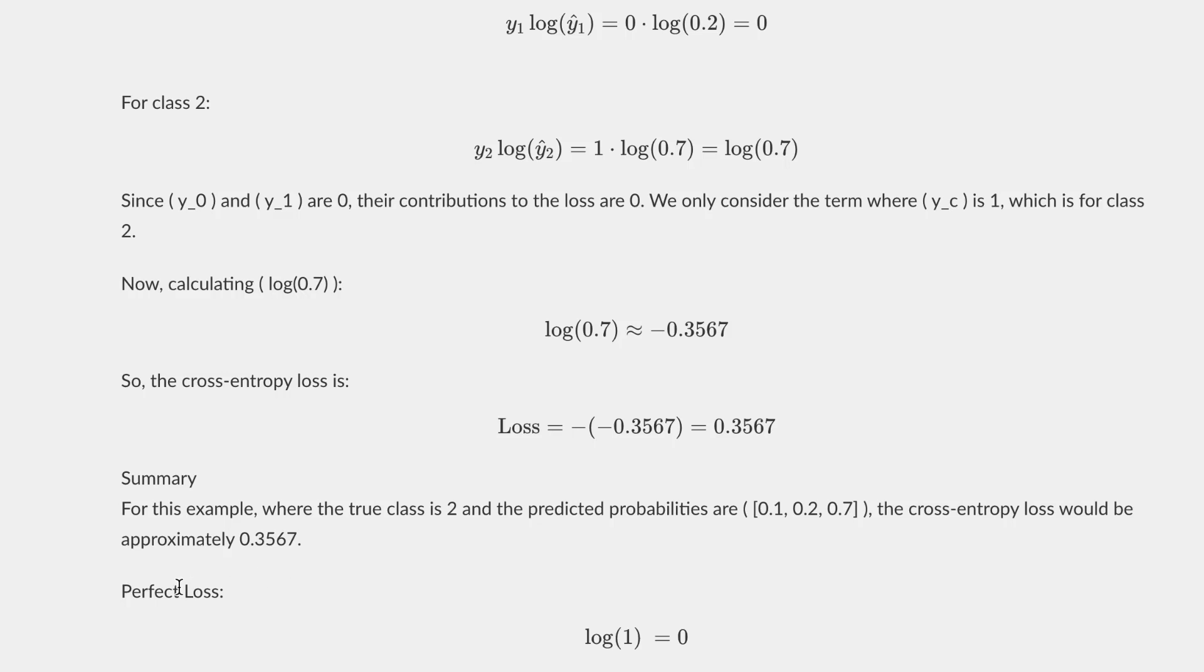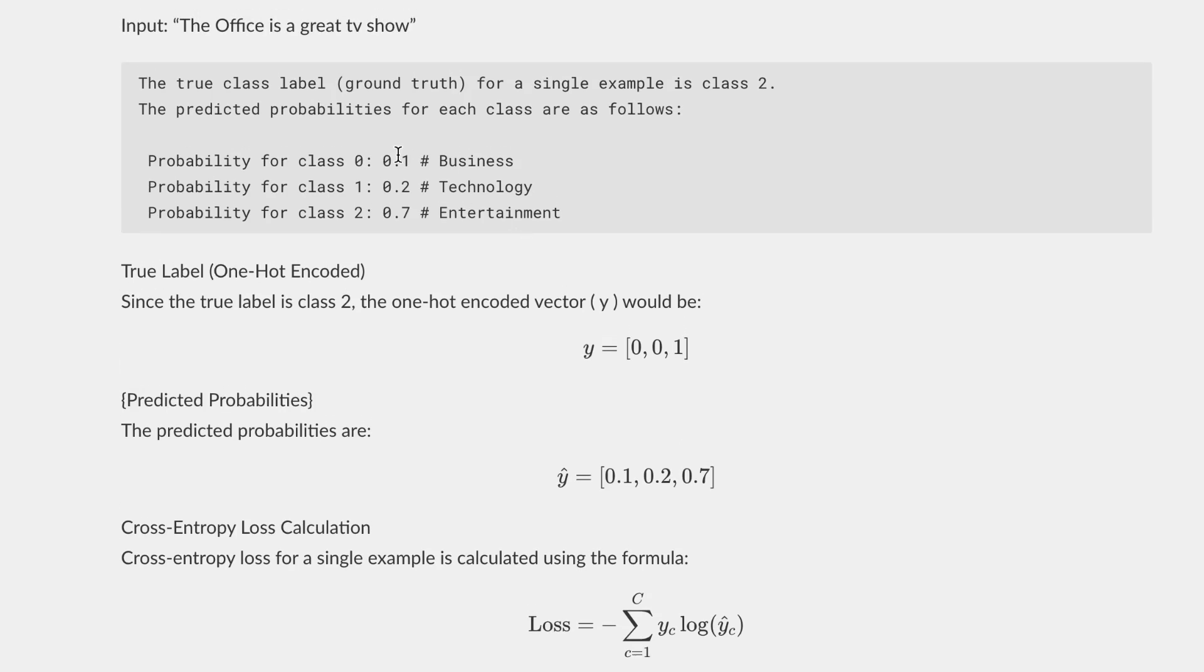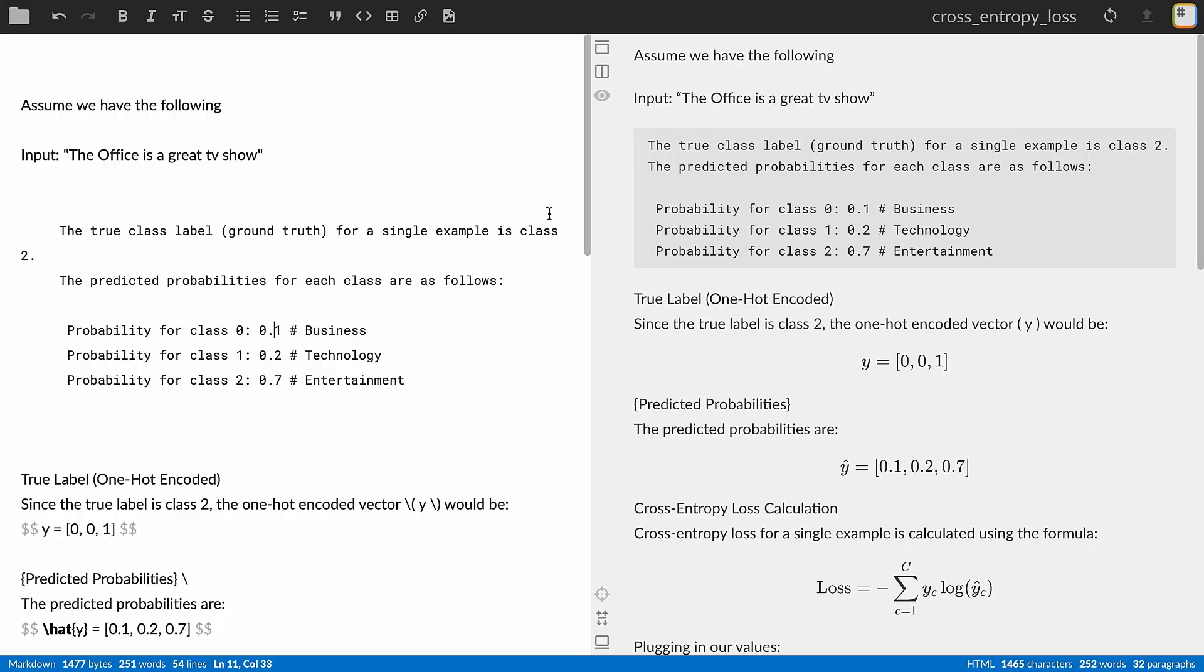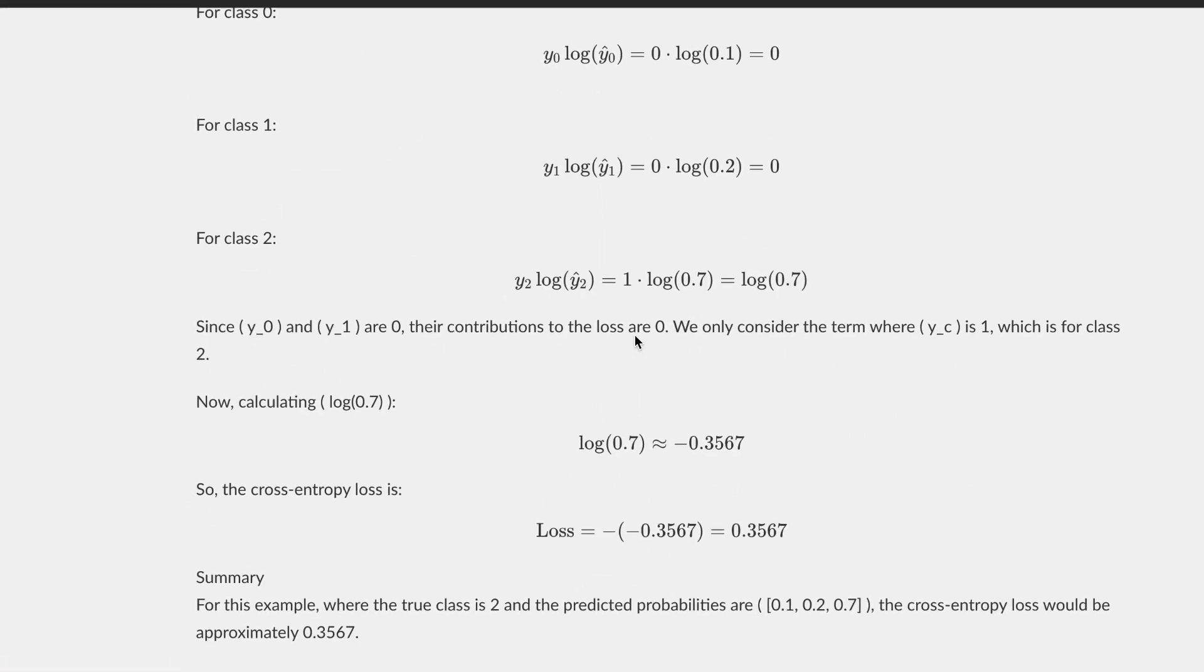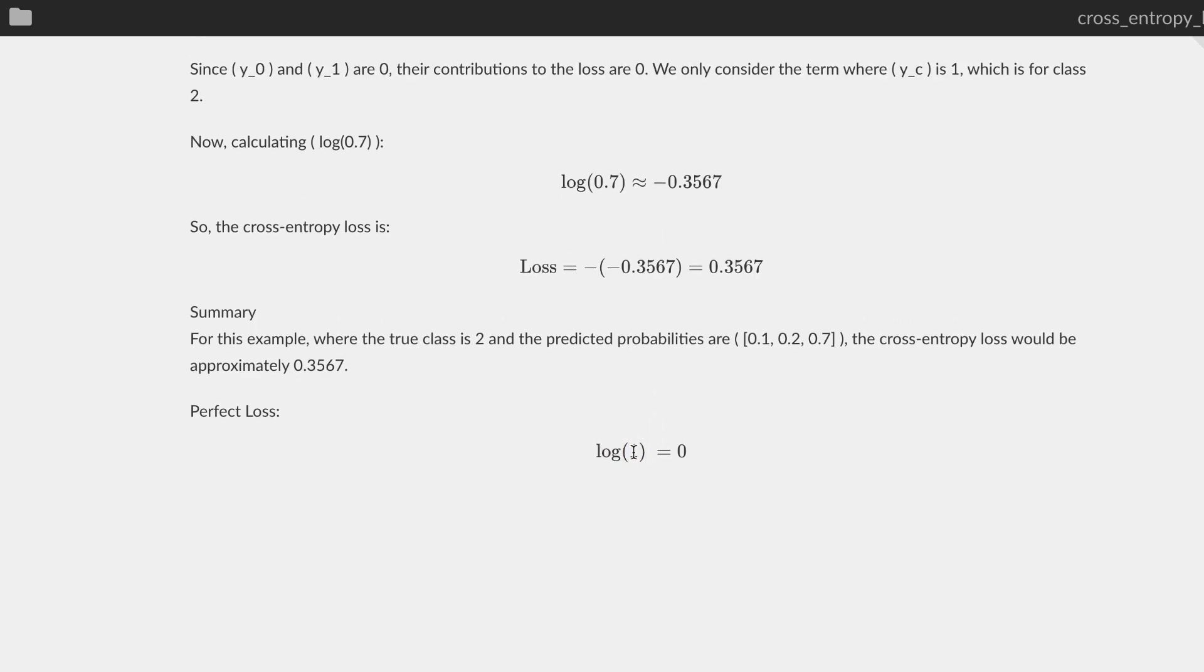Now a perfect loss would mean that the model has 0.0 here, 0.0 here, and this would be 1.0. That would mean that our loss would be zero, right? Because log of 1 is equal to 0, so that means we have no loss at all.